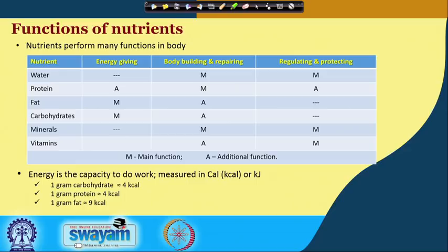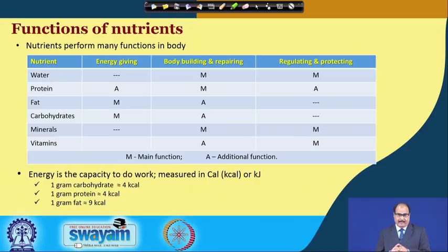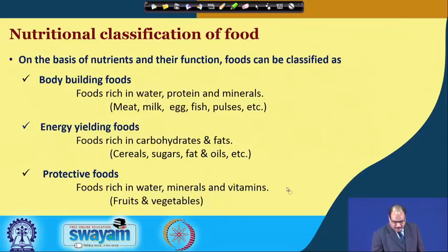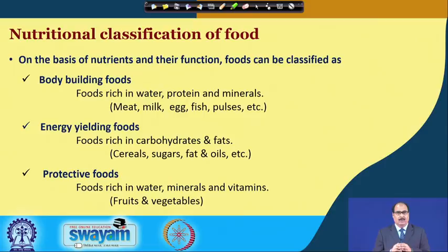Energy is the capacity to do work. In the case of food materials, it is generally measured in calories or kilocalories, or sometimes expressed in kilojoules. One gram of carbohydrate upon complete oxidation gives 4 kilocalories of energy. An equal amount of energy is given by protein as well. However, 1 gram of fat gives 9 kilocalories of energy. The foods we eat daily are classified on the basis of the nutrients they contain as well as the functions those nutrients perform in the body.